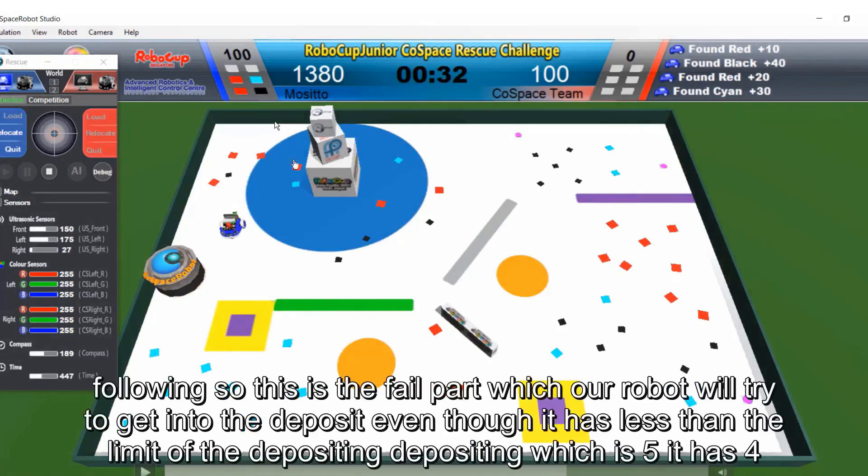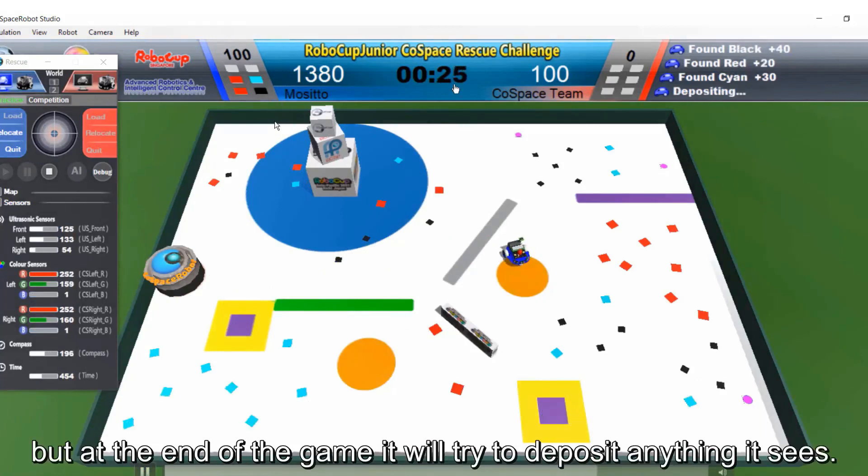So this is the third part, which our robot will try to get to the deposit, even though it has less than our limit of depositing, which is five. It has four, but it's at the end of the game, so it will try to deposit anything it sees.